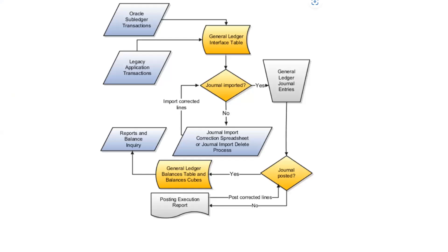This diagram gives a high-level picture of how to import journal entries. Subledger transactions or legacy application transactions move to the General Ledger interface table. From there, the Import Journals process makes a decision: if the data passes validation it is good data and moves to the next level as General Ledger journal entries. If the data is not accurate, it is thrown to an error — either the General Import Correction Spreadsheet or the General Import Deletion process.